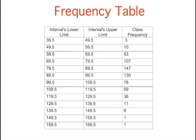To create this frequency table, the range of scores was broken into intervals, called class intervals. The first interval is from 39.5 to 49.5, the second from 49.5 to 59.5, et cetera.